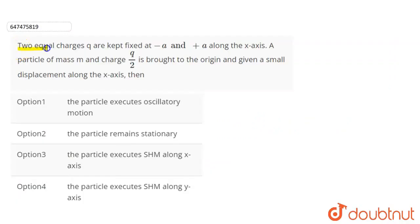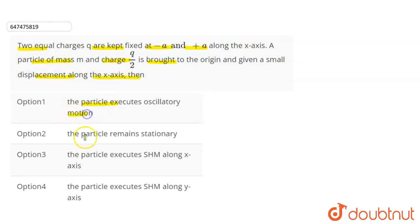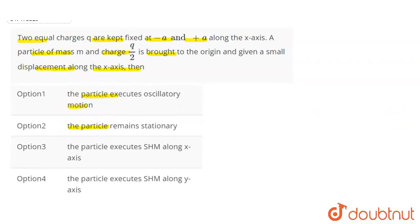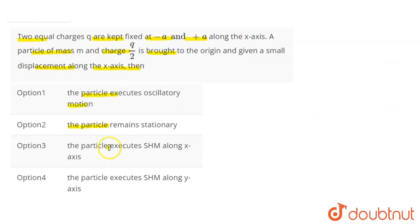In this question, we have two equal charges Q kept fixed at minus A and plus A along the x-axis. A particle of mass m and charge Q/2 is brought to the origin and given a small displacement along the x-axis. Then: option one, the particle executes oscillatory motion; option two, the particle remains stationary; option three, the particle executes simple harmonic motion along the x-axis; option four, the particle executes simple harmonic motion along the y-axis.